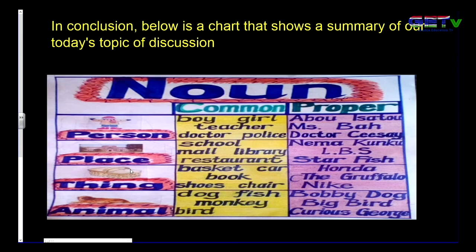Names of places — common names: school, mall, library, restaurant. Specific names: Nema Kunku Lower Basic School, Starfish. Names of things — common names: basket, car, book, shoes, chair. Proper nouns or specific names: Honda, The Gruffalo, Nike. Names of animals — general names or common nouns: dog, fish, monkey, bird. Proper nouns or specific names: Bobby, Big Bird, Curious George.